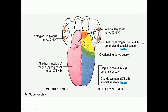Similarly, the posterior one-third of the tongue is derived from the third arch, and the nerve of the third arch is the glossopharyngeal nerve — explaining its nerve supply. The posterior-most part develops from the fourth arch, and the nerve of the fourth arch is the superior laryngeal nerve, whose internal laryngeal branch supplies the posterior-most part of the tongue.